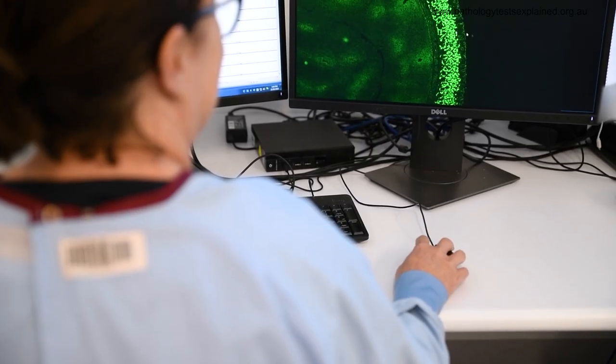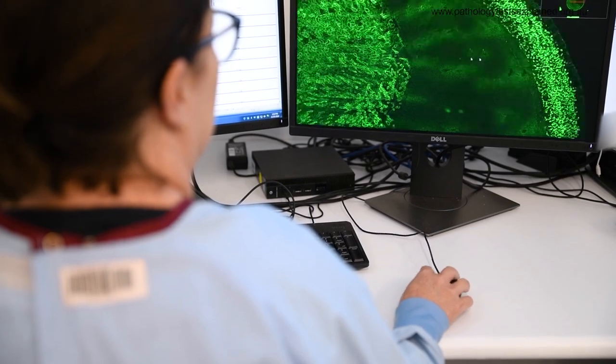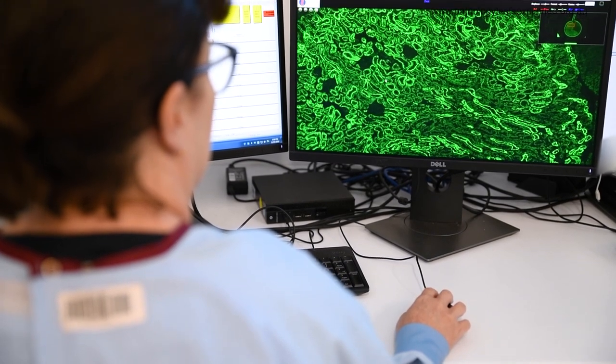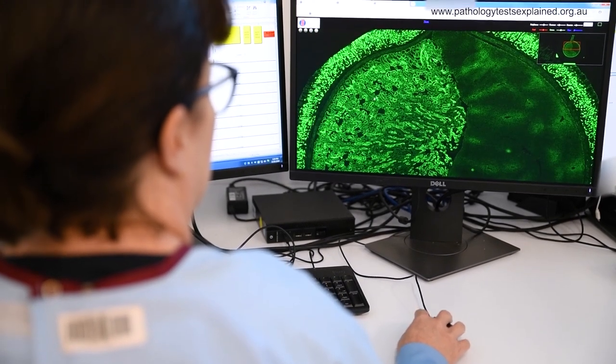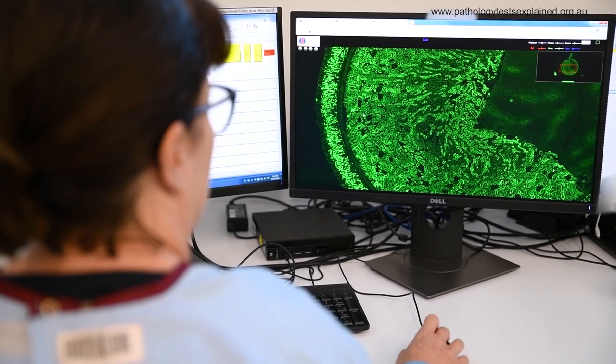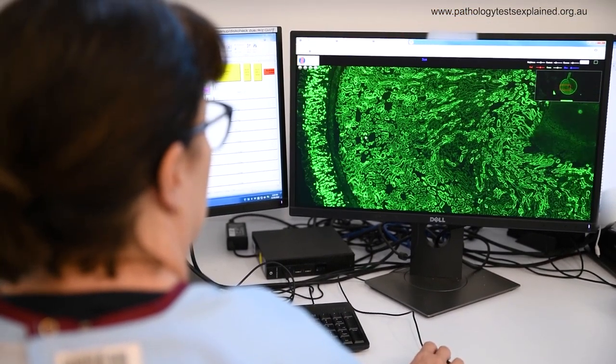There are a vast number of autoimmune tests, including ANA, known as the anti-nuclear antibody test, thyroid antibodies, celiac antibodies, platelet antibodies, neutrophil antibodies, red cell antibodies, and the list goes on.